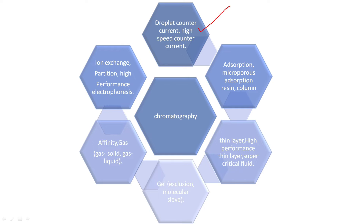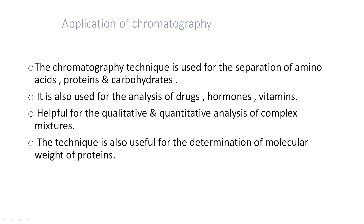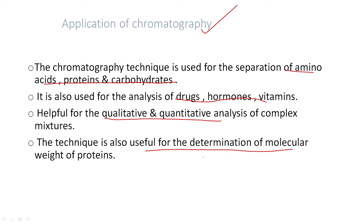There are many types of chromatography: droplet counter-current, high-speed counter-current, adsorption, microscale adsorption, resin column, thin layer, high-performance thin layer, supercritical chromatography, gel, affinity, gas, ion exchange, and partition chromatography. These are used for separation of amino acids, proteins, and carbohydrates, and for analysis of drugs, hormones, vitamins, purification, identification, and determination of molecular weight of proteins.